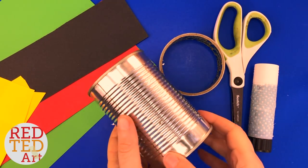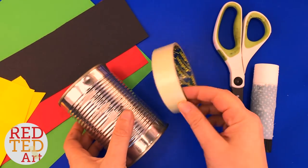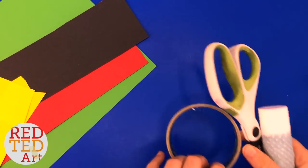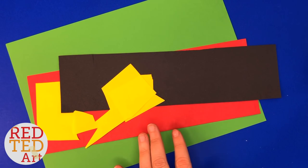To make our tin can ELF, you will need a tin can, some tape, scissors and a glue stick, and of course a range of ELF colors.